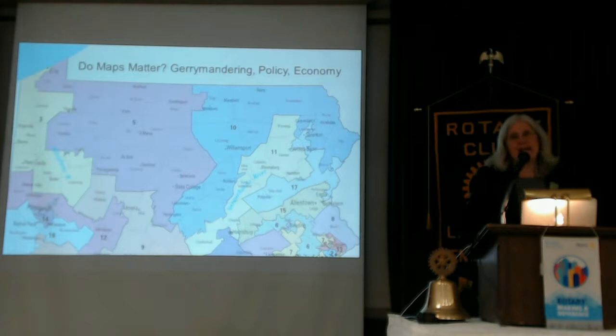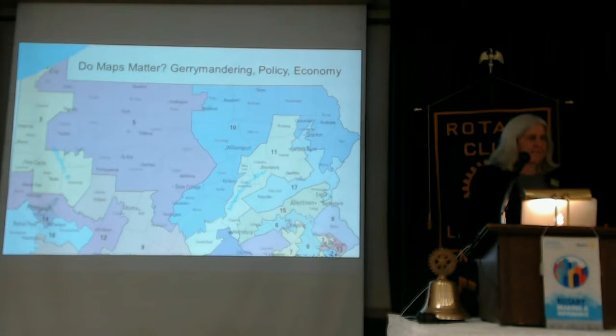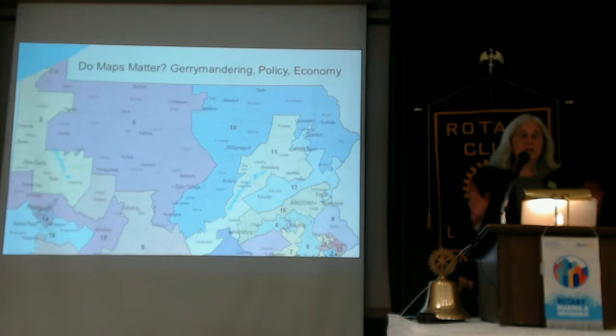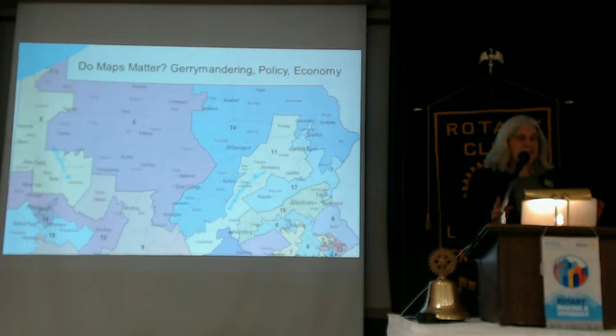We're going to start with vocabulary. There are three words you need to understand to really have a grasp of this, and the first one is reapportionment. Reapportionment happens by law. There are 435 seats in the House of Representatives, and those have to be divided across all the states. As we know, population moves, population shifts, and historically, population in Pennsylvania relative to the rest of the country has gone down.